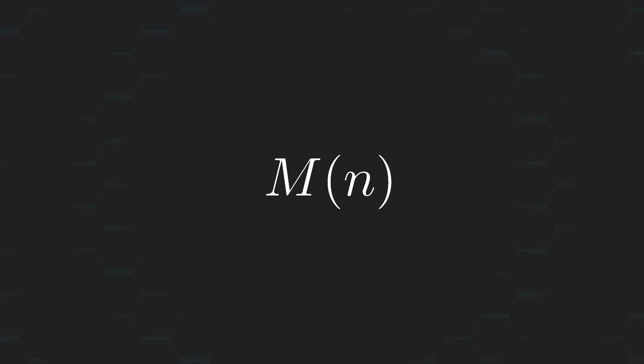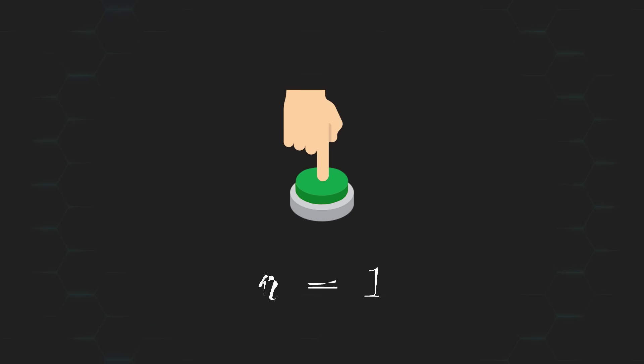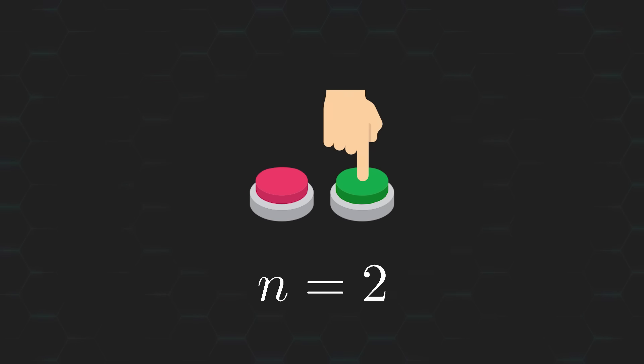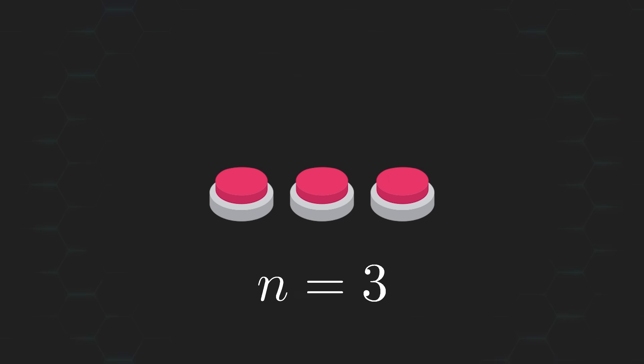Now let m be the minimum number of moves needed to solve the puzzle with n number of switches. With one switch, the puzzle can easily be solved with one toggle. With two switches, we can turn on the right switch first, followed by the left one, to solve the puzzle in two moves. With three switches, we can turn on the rightmost switch first, which allows us to now turn on the middle switch. Now, notice that we can't toggle the leftmost switch just yet, because the rightmost switch is on. So, to get around this, we just have to turn off the rightmost switch, and then turn on the leftmost switch. And finally, turning the rightmost switch back on completes the puzzle in five moves.